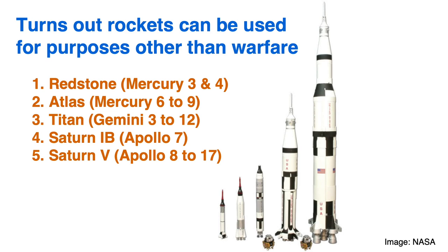After Project Mercury, NASA moved to the Gemini missions. Each Gemini mission had two astronauts instead of the one onboard Mercury spacecraft, and all Gemini missions launched on the Titan rocket. For Project Apollo, two types of Saturn rockets were used: the Saturn 1B, used for the Earth orbital Apollo 7 mission, and the much more powerful Saturn V rocket, used for Apollo 8 through Apollo 17.